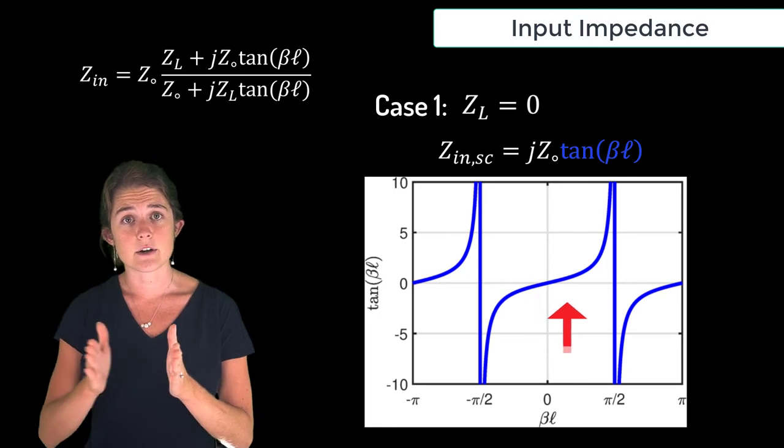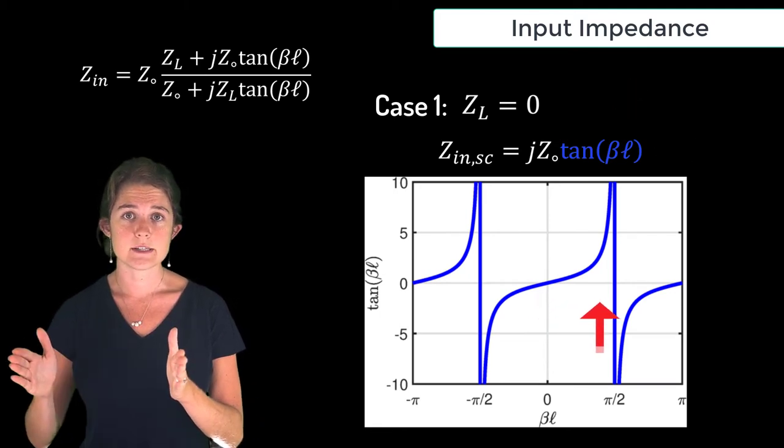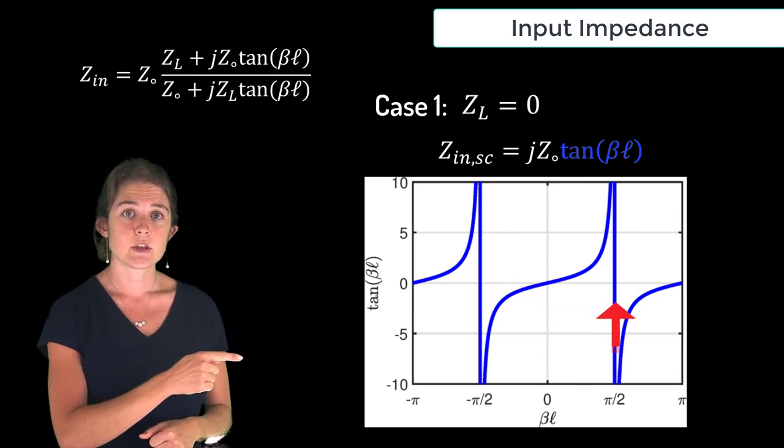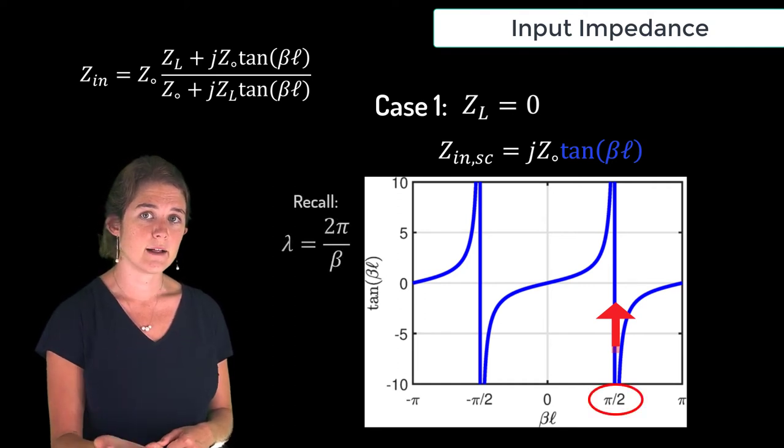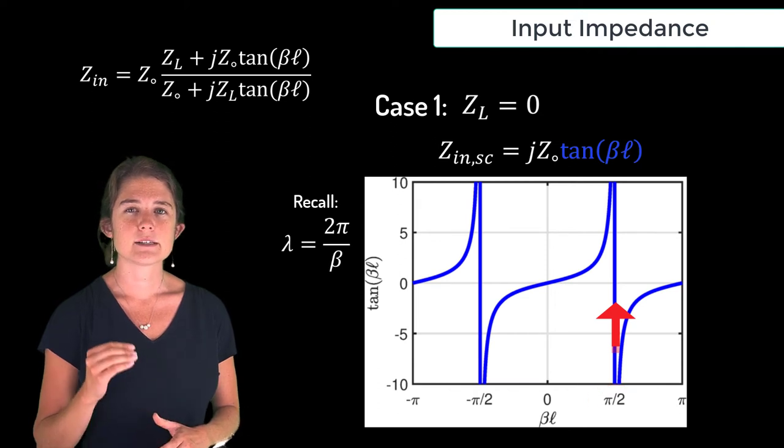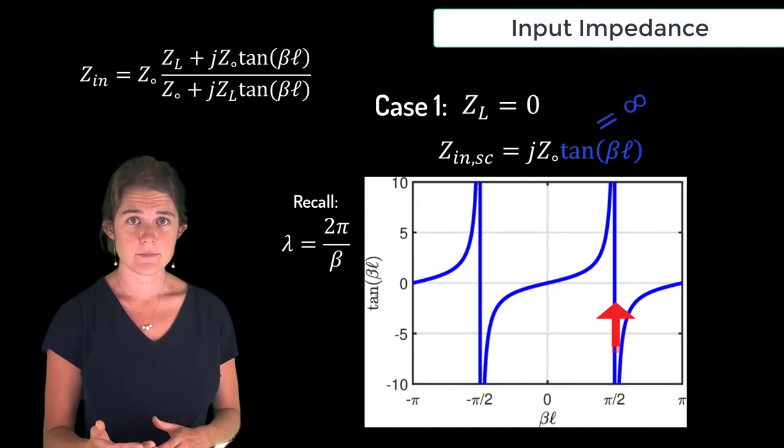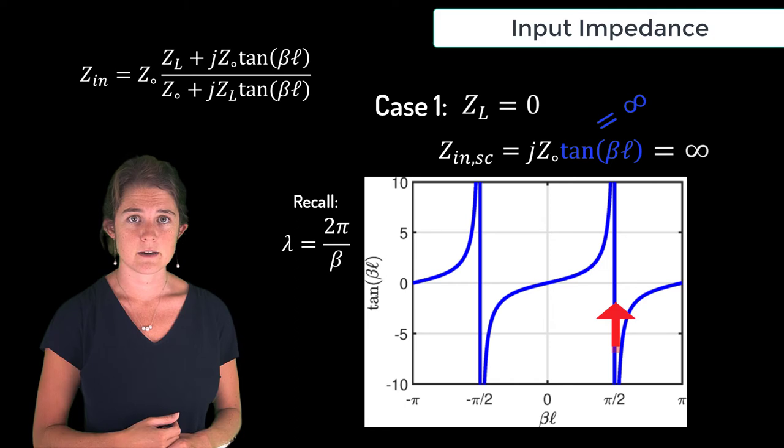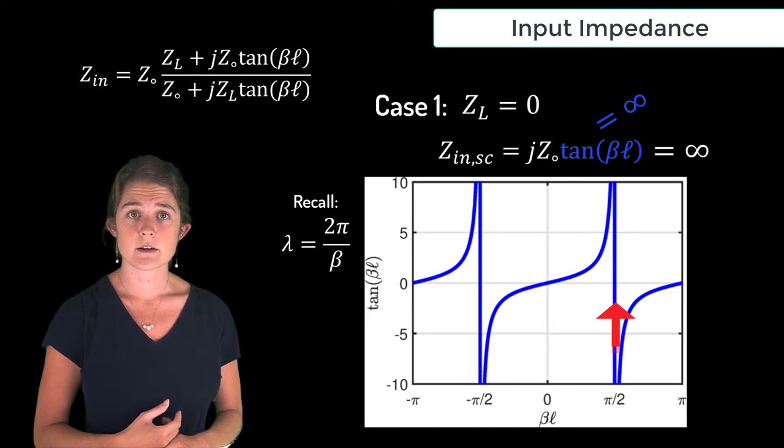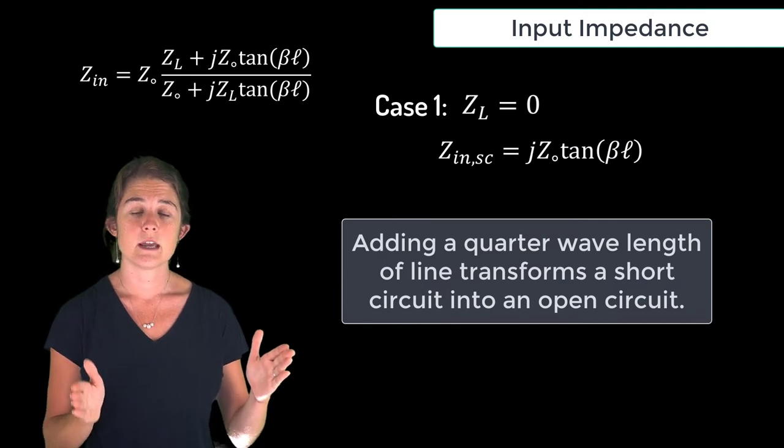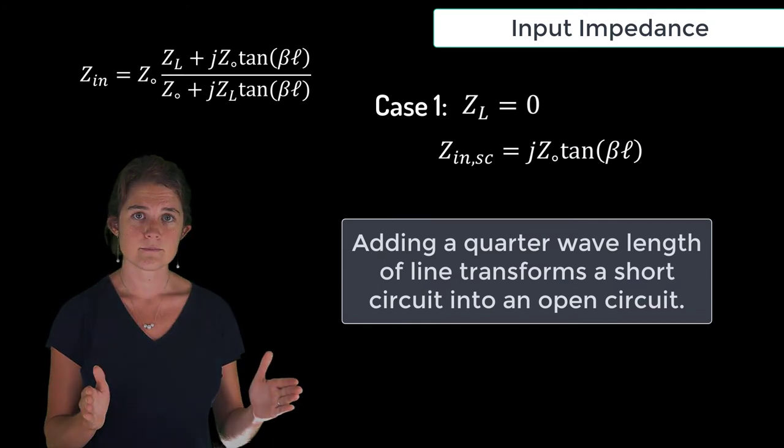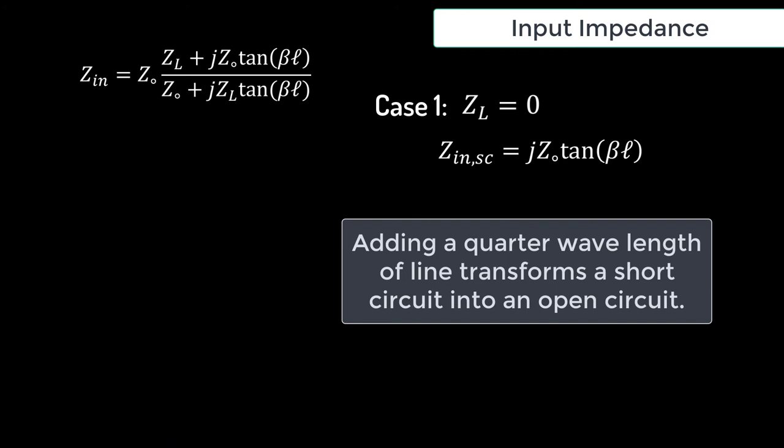But as the line gets longer tangent beta L increases until here where beta L is pi over 2 which corresponds to length L of lambda over 4. Here tangent beta L is infinite and the impedance is infinite which looks like an open circuit. So adding a quarter wavelength of line transformed a short circuit into an open circuit.